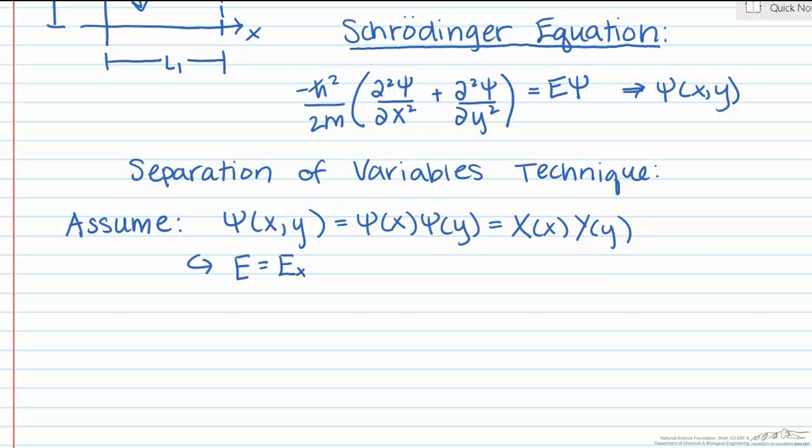Our total energy of the system is then the sum of the energy associated with motion in the x direction, e sub x, and in the y direction, e sub y.